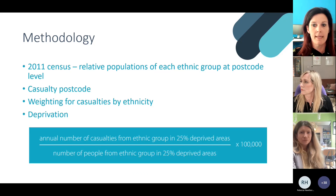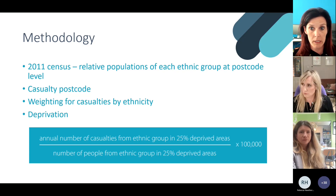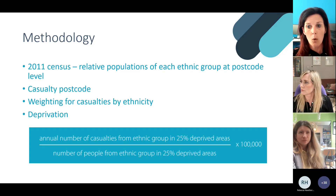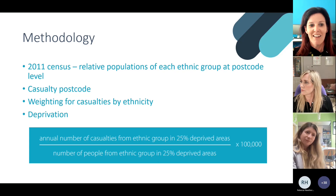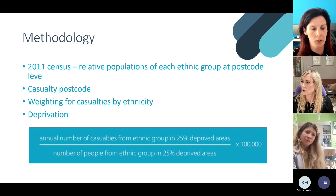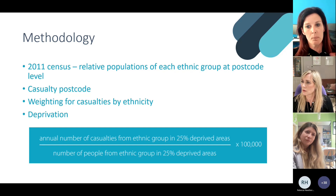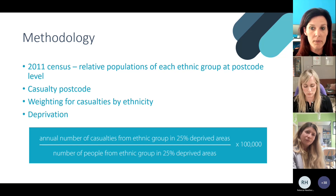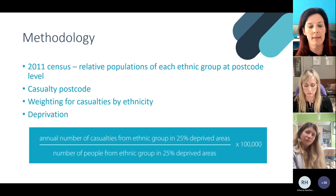Ethnicity isn't recorded in Stats19, even though perhaps it could be included if self-reported. But we do have the postcodes of casualties, and the 2011 census provides the relative populations of each ethnic group at postcode level, which we could match to those casualty postcodes. This method is completely unreliable at an individual level, but the weighting can provide an appropriate proxy for the number of casualties from each ethnic group when aggregated at a national level. We calculated and compared casualty rates per 100,000 population.